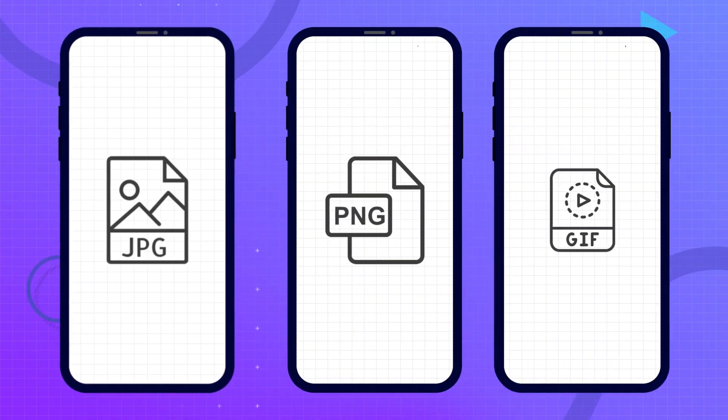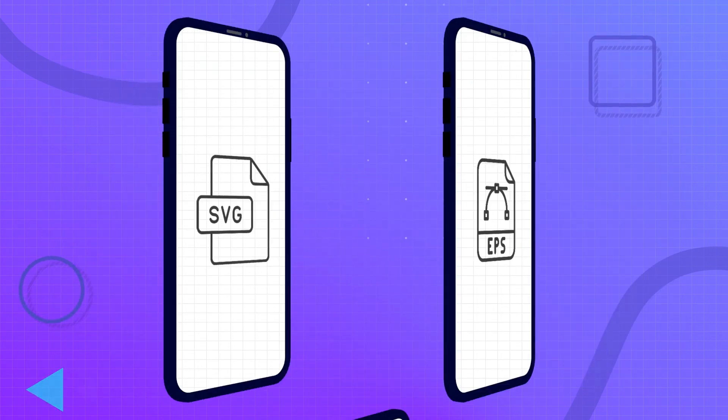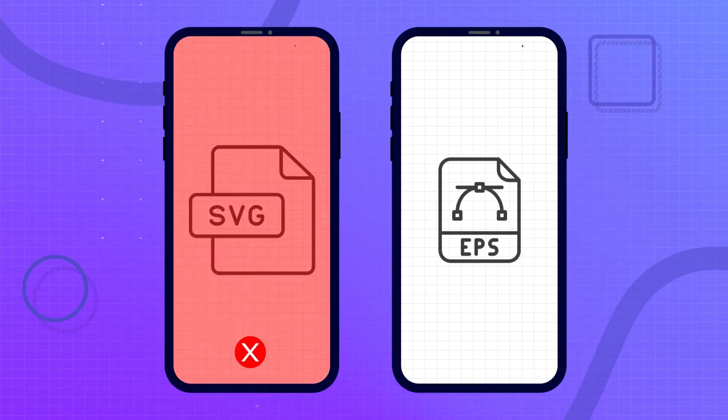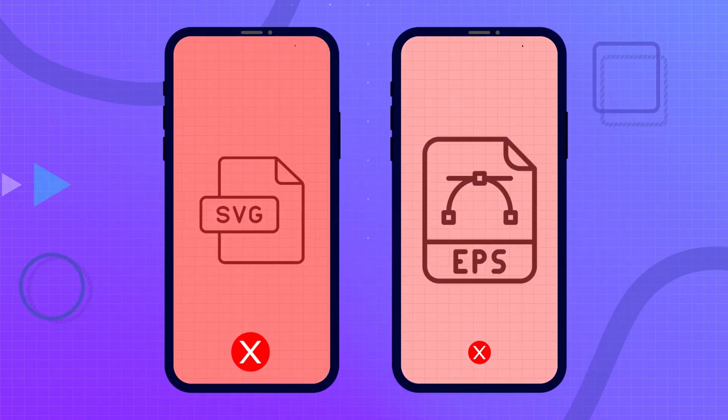Provide a raster file such as JPG, PNG, or GIF. Avoid vector files such as SVG or EPS.